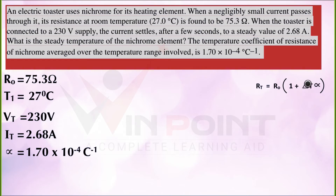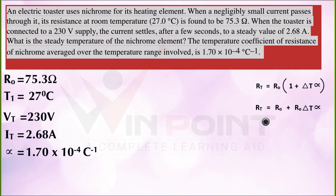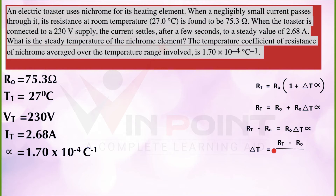We will multiply R₀ into the bracket: Rt = R₀ + R₀·ΔT·α. Then taking R₀ to the left side: Rt − R₀ = R₀·ΔT·α. From there we can make an equation for ΔT: ΔT = (Rt − R₀) / (R₀ · α).